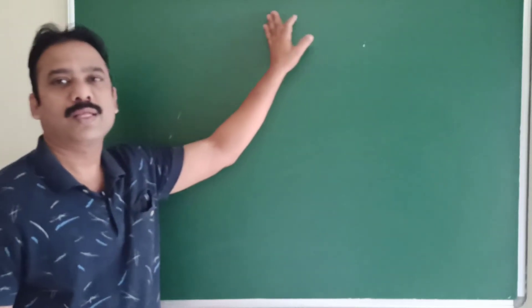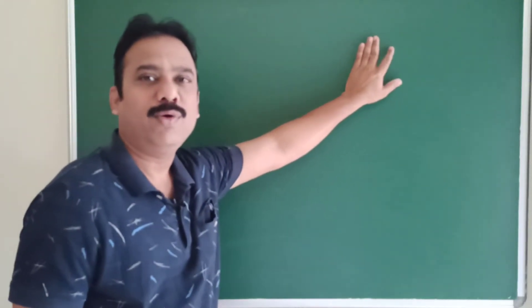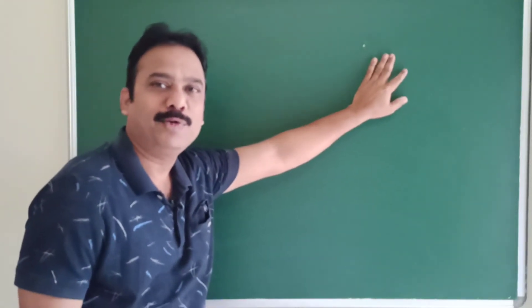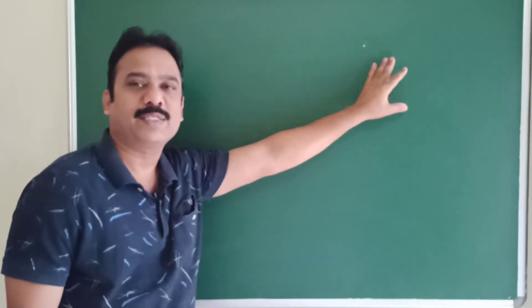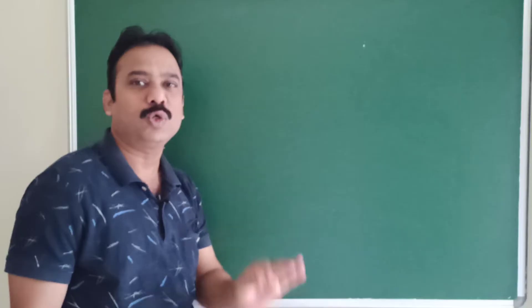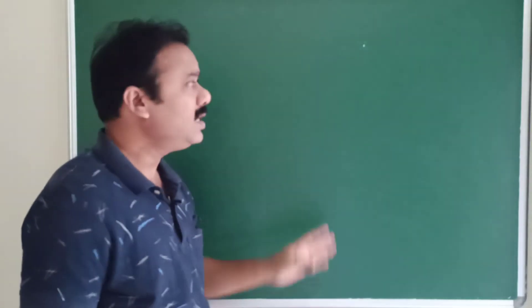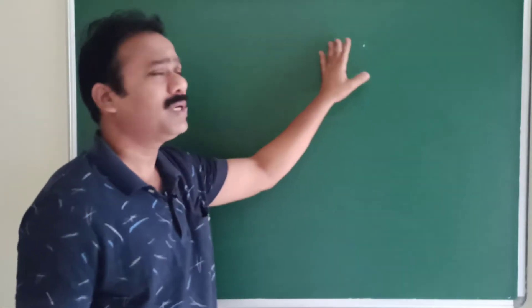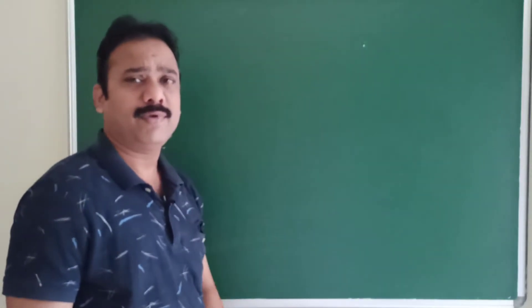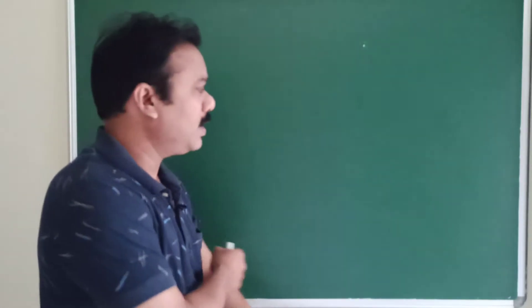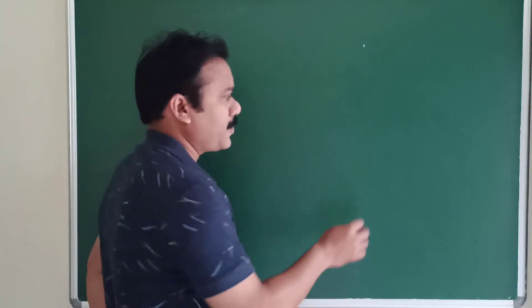Hello students, in this video I am going to explain about gold number. Gold number is an antioxidant property related to lyophobic colloidal solutions.